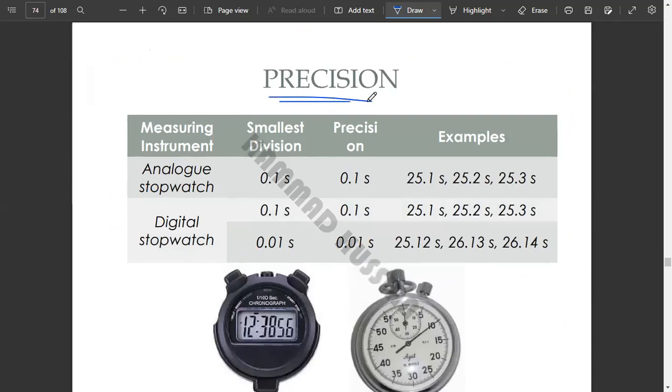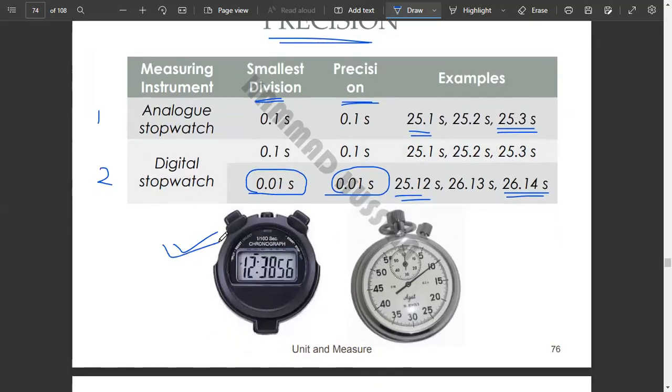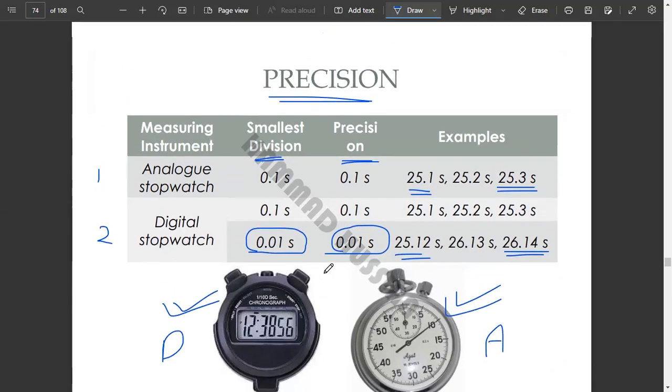When we talk about the precision of time instruments, we have number one, an analog stopwatch, and number two, a digital stopwatch. If an MCQ is asked which one of these is more precise, consider which has the smallest division of time. Here we have a digital and an analog stopwatch picture.